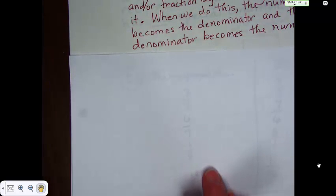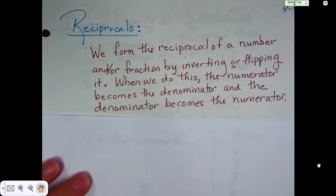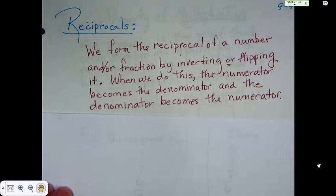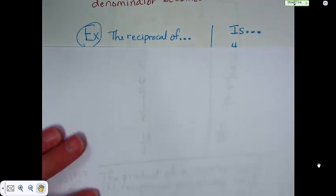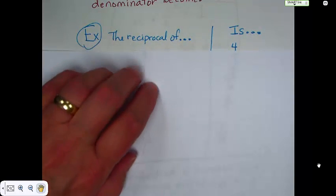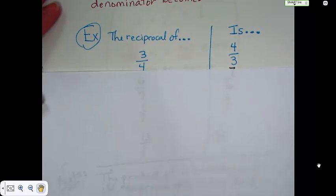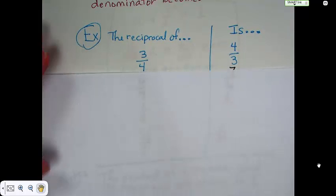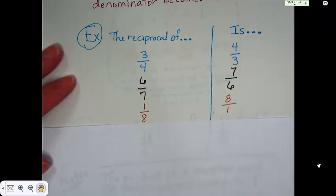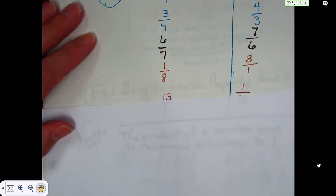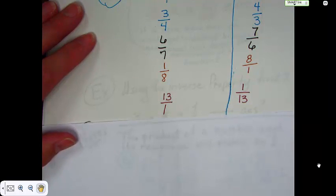Okay. All right. Now, we're going to talk a little bit about reciprocals. And then we'll talk about the property that goes along with them. So, reciprocals. We form the reciprocal of a number and or a fraction simply by inverting or flipping it. When we do this, the numerator becomes the denominator and the denominator becomes the numerator. Okay. Here's some examples. You'll want to put these in your notes because it'll just kind of help you remember. The reciprocal of 3 fourths is 4 thirds. We just flipped it. The reciprocal of 6 sevenths is 7 sixths. The reciprocal of 1 eighth is 8 over 1. The reciprocal of 13 over 1 is 1 over 13.